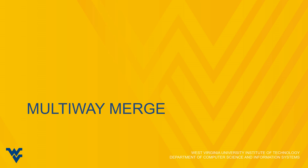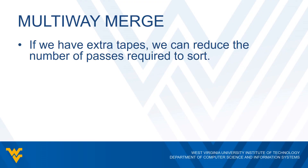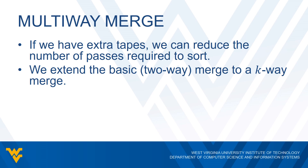We'll now mention another external sorting algorithm, which we call multi-way merge. If we have extra tapes, we can actually reduce the number of passes that we need to perform the sort. So we extend our basic merge, which is a two-way merge, into what we call a K-way merge.